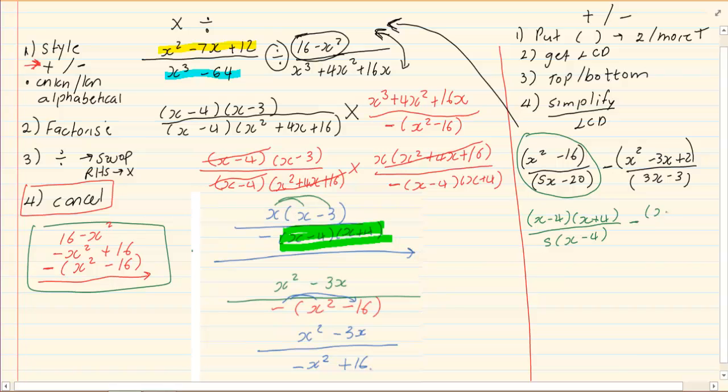Minus, factorize the top, x minus 2, x minus 1 all over 3 into x minus 1. Cancel where you can. Following the rules of multiplication and division. Now, what do we have? We have x plus 4 over 5 minus x minus 2 over 3.